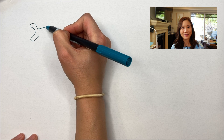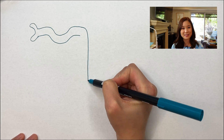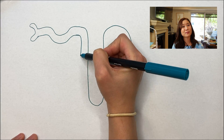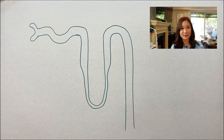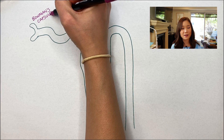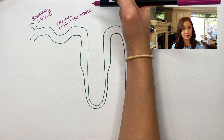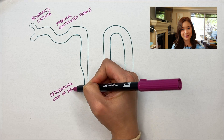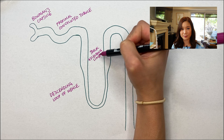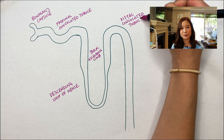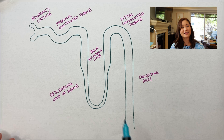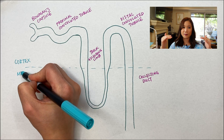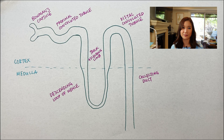Let's review the different parts of a nephron. You have the Bowman's capsule, the proximal convoluted tubule, the descending loop of Henle, the thick ascending limb, the distal convoluted tubule, and the collecting duct. Part of the nephron is in the cortex of the kidney and then part of it dips down into the medulla of the kidney.